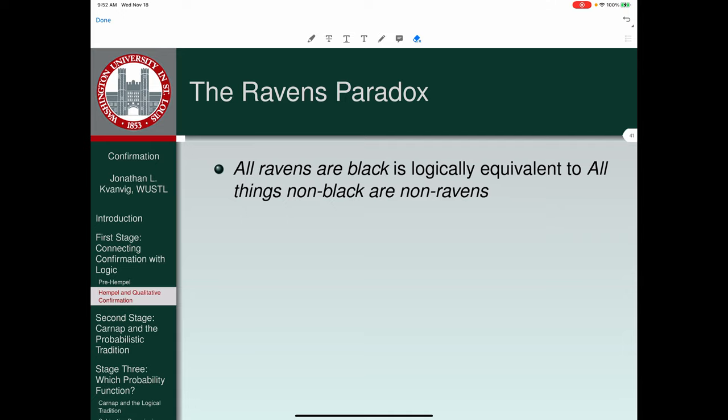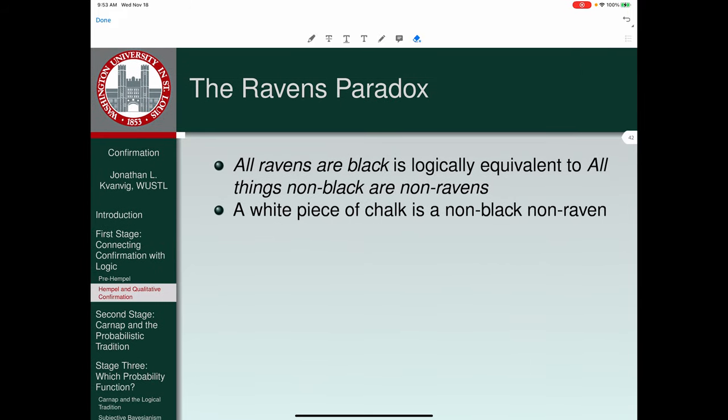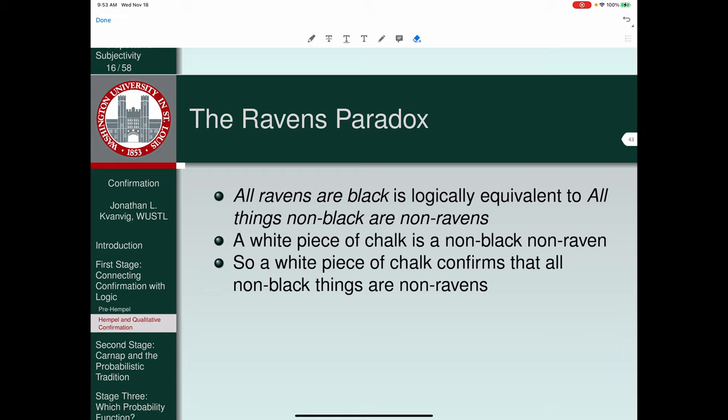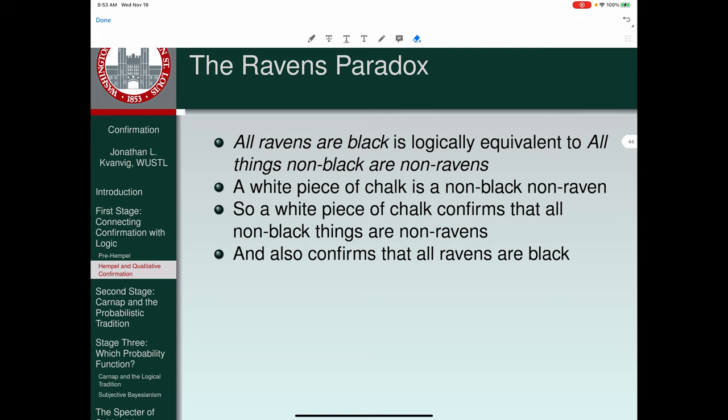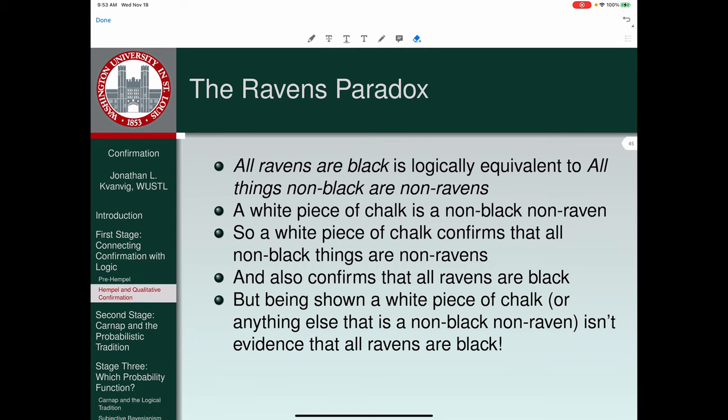So first point, all ravens are black is logically equivalent to all things non-black are non-ravens. Notice that's just transposition inside a universal quantifier context. A white piece of chalk is a non-black non-raven. So a white piece of chalk confirms that all non-black things are non-ravens, because it's an instance of that generalization. And by the equivalence condition, it thereby also confirms that all ravens are black. But being shown a white piece of chalk or anything else that's a non-black non-raven isn't evidence that all ravens are black.